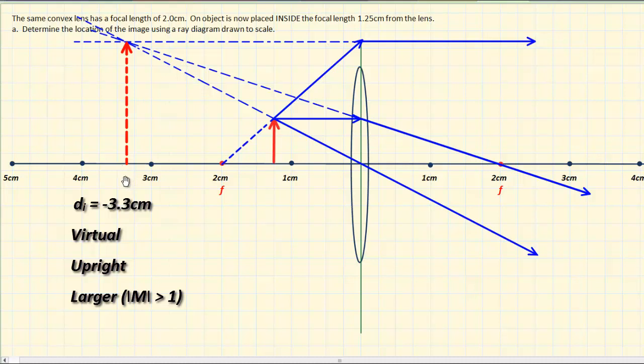So to summarize, our image is located at negative 3.3 centimeters. It's upright, it's magnified, it's larger than the object, and it's virtual.